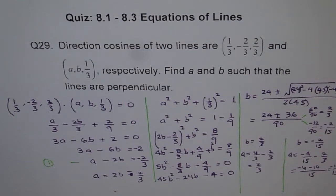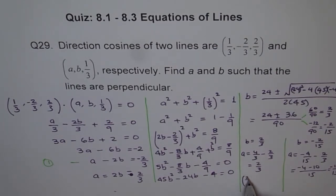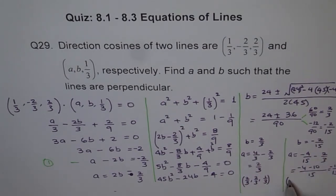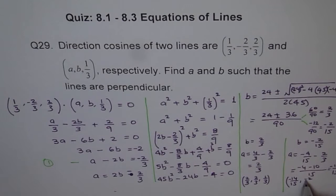The direction cosines could be A = 2/3, B = 2/3, and 1/3 as one possible answer. The other is A = -14/15, B = -2/15, and 1/3.